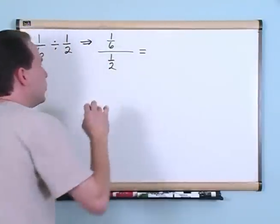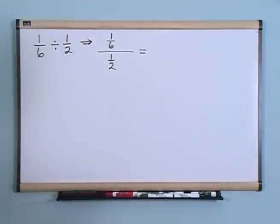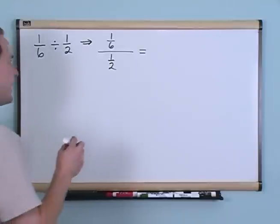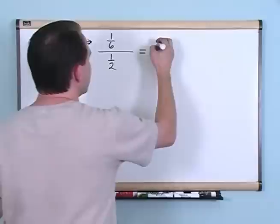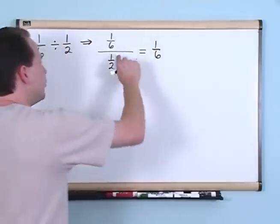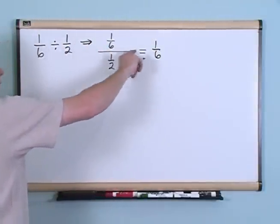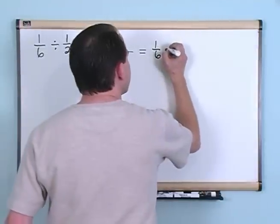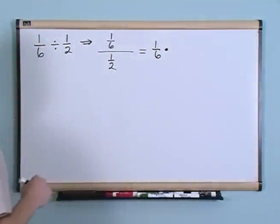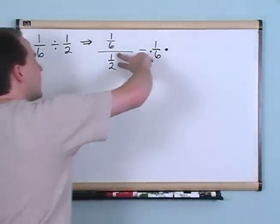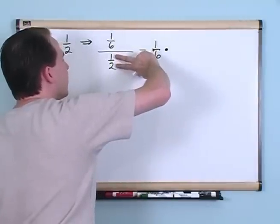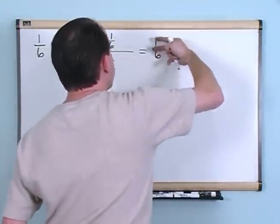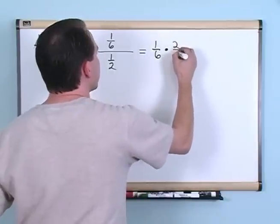The way in which you do division of fractions is very simple. You just take the top number, 1/6, and you change this division, which is this big line here, into multiplication. When you do that, you change it into multiplication, so you put a big dot here, that means multiplication. You're not going to multiply by 1/2. You're going to multiply and you're going to flip this fraction over. You're going to multiply by 2 over 1.